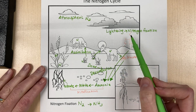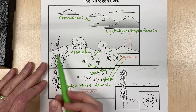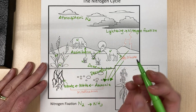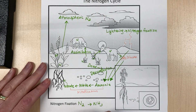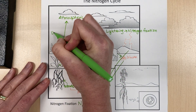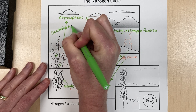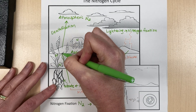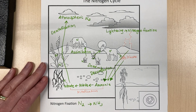So we have nitrogen fixation creating our ammonia from N2. And then sometimes, to complete our cycle, it goes back up into the atmosphere through the process called denitrification — that's really from nitrates back into N2 gas. And that completes our cycle, but there's still some other parts that you have to know.